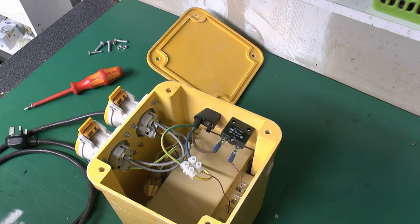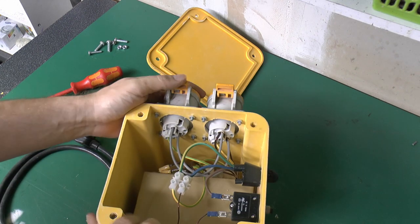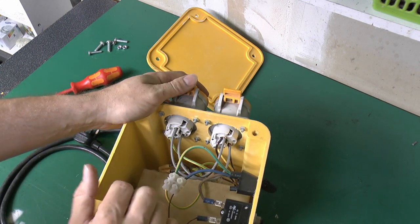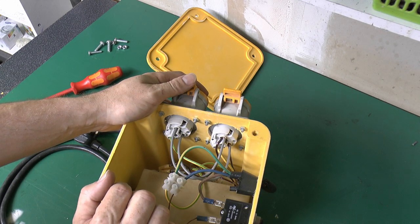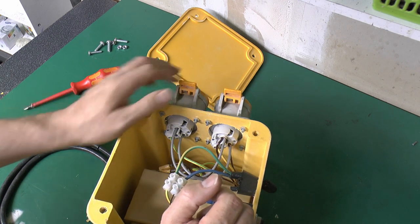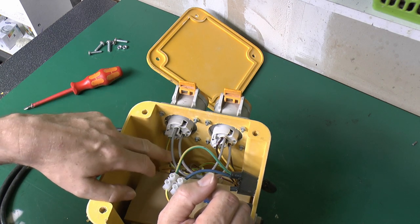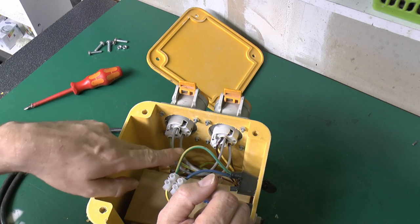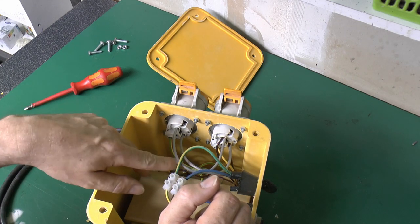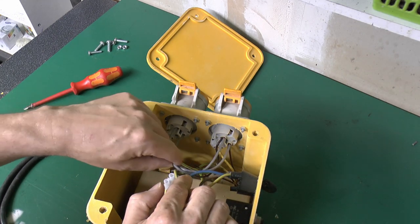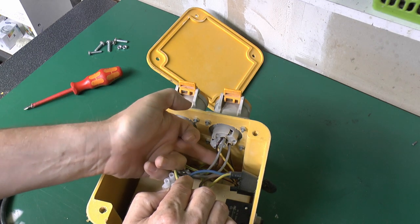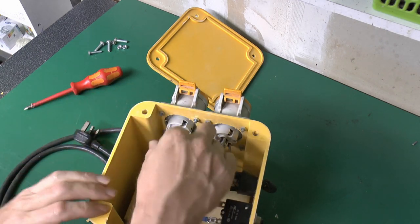This is what we've got here. There's the transformer down there, and as suspected it's pretty much all sealed in resin. Not a whole lot to see, but basically it's just a transformer with an input winding and the output with 110V and a center tap. Nothing too surprising.